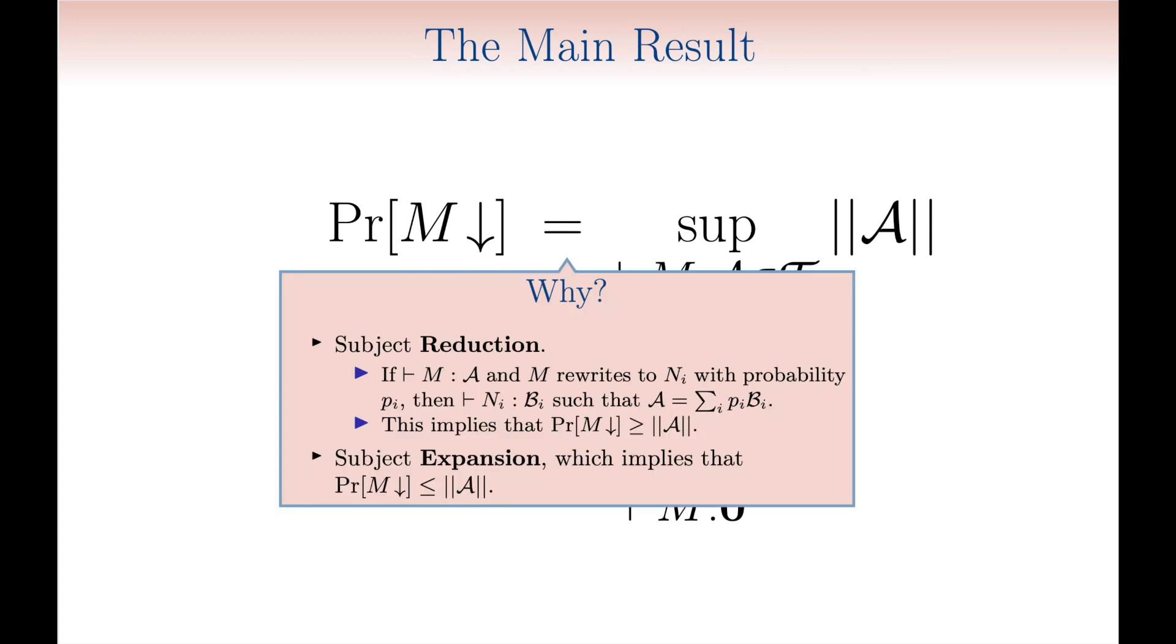The proof of this result makes heavy use of subject reduction, which unsurprisingly has a quantitative flavor here, and of subject expansion, namely the dual result. Each of them has, as a corollary, one of the inequalities which together imply the equation.